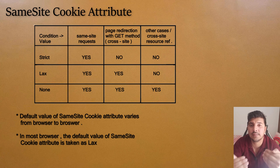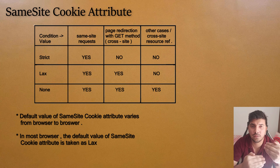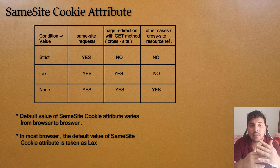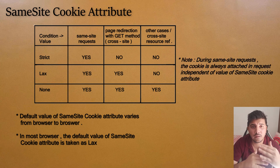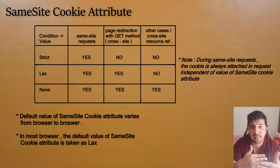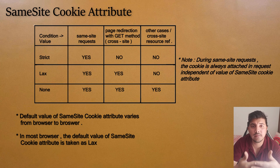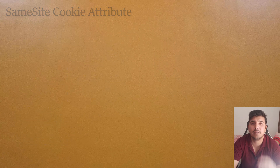One final point: what happens if no value for the SameSite cookie attribute is set? In that case, it is up to the browser. Some browsers may take the value as None, some may take it as Lax, but generally in most browsers the default value is taken as Lax — though it can vary from browser to browser. In this video we discussed the concepts; in the next video we will see how to actually visualize it on our laptop. That's all for today, thanks for watching, see you in the next video.